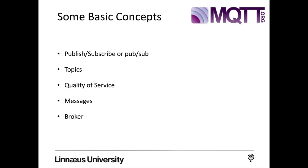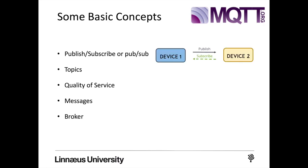The MQTT protocol is based on the principle of publishing messages and subscribing to topics, known as pub/sub. Multiple clients connect to a broker and subscribe to topics they are interested in. Clients can also connect to the broker and publish messages to topics. For example, device one publishes on a topic, and device two, which is subscribed to that same topic, receives those messages.